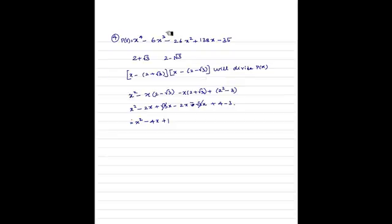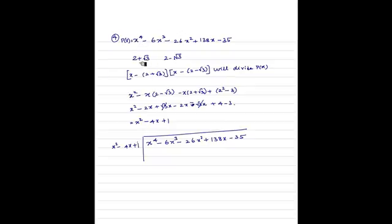Basically, p(x) will be divisible by x squared minus 4x plus 1. When we divide x to the 4 minus 6x cubed minus 26x squared plus 138x minus 35 by x squared minus 4x plus 1, we get remainder 0 and the quotient can be factorized to get the other two roots. This equation has 4 roots because the degree is 4.